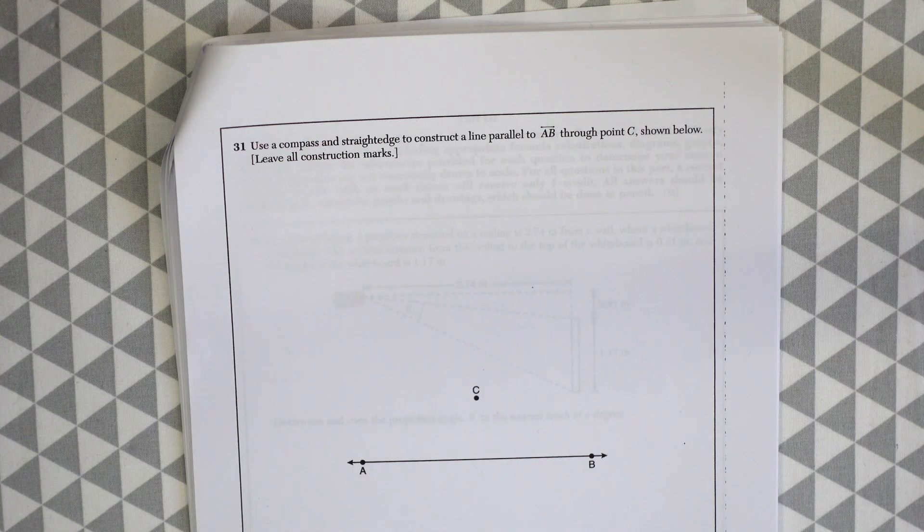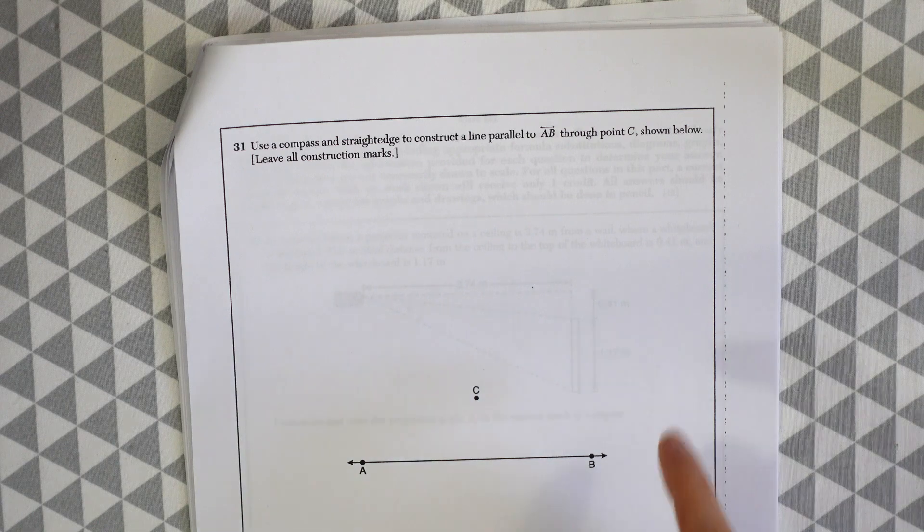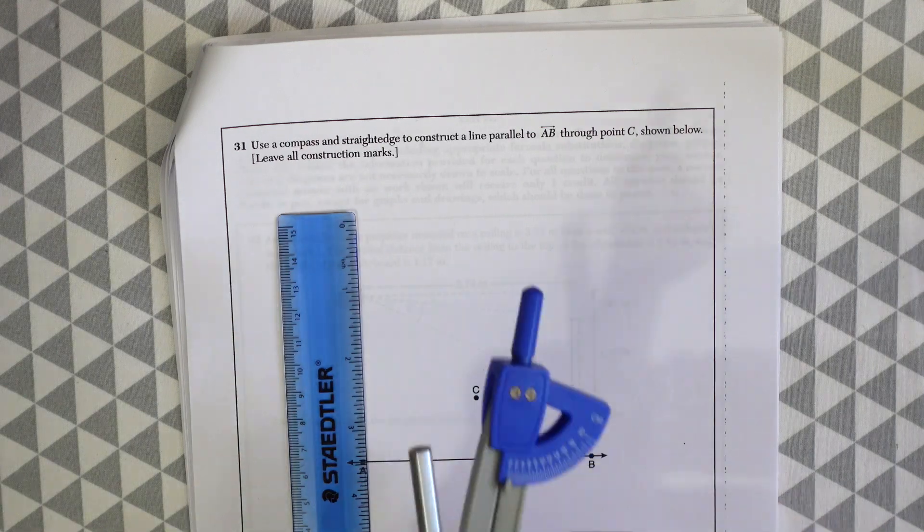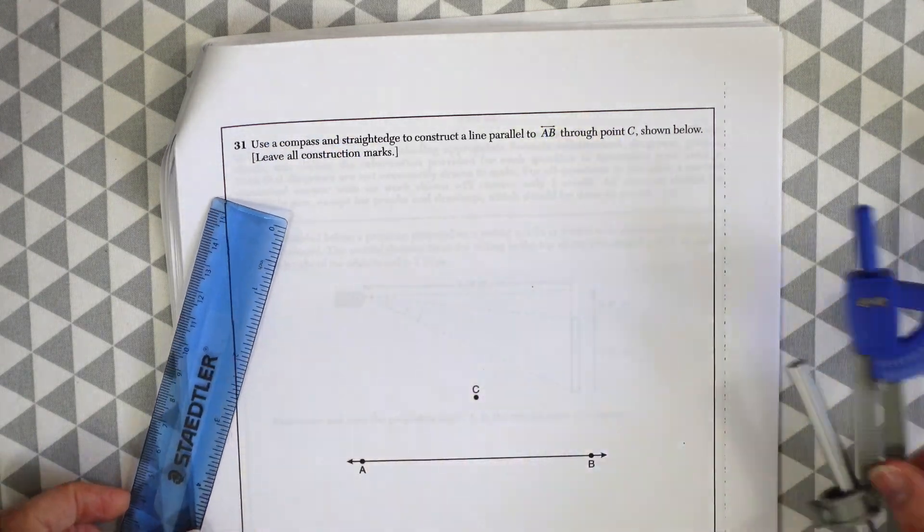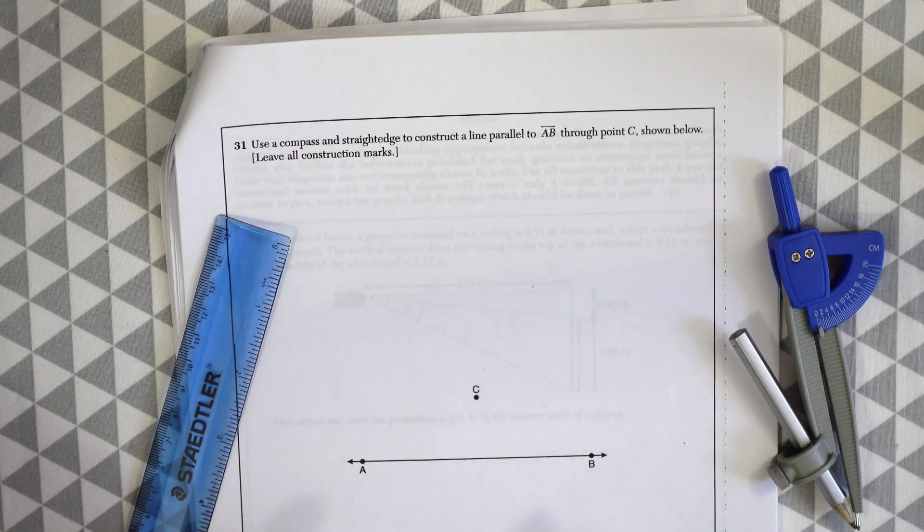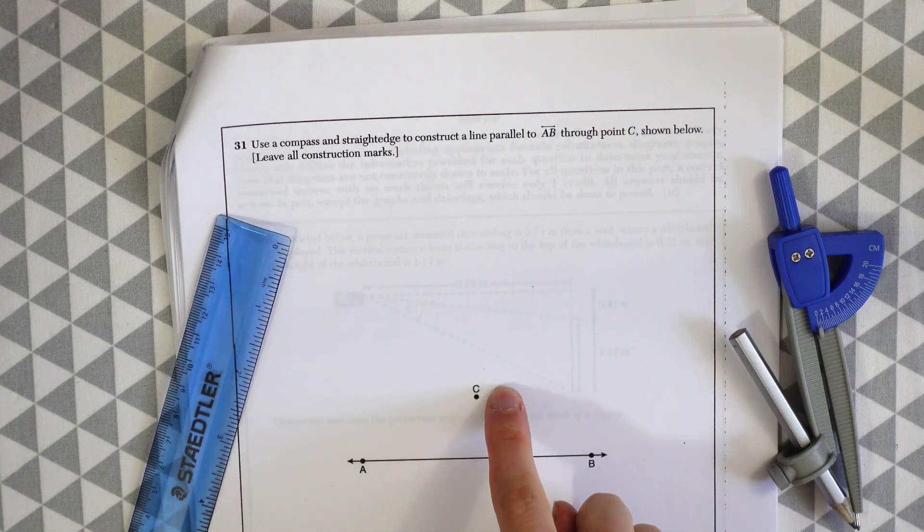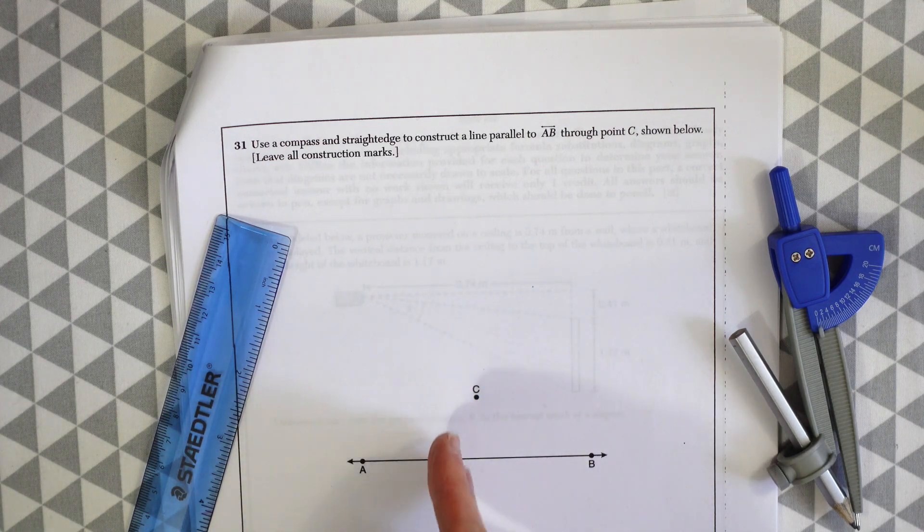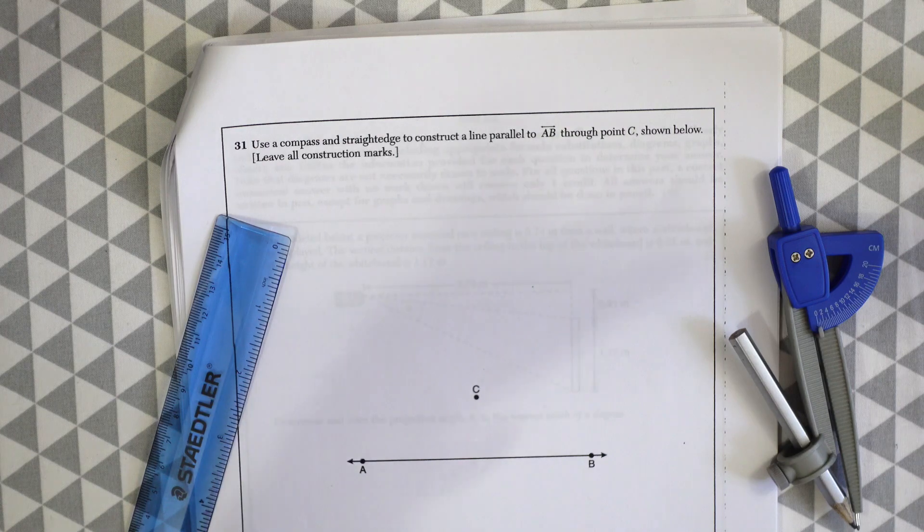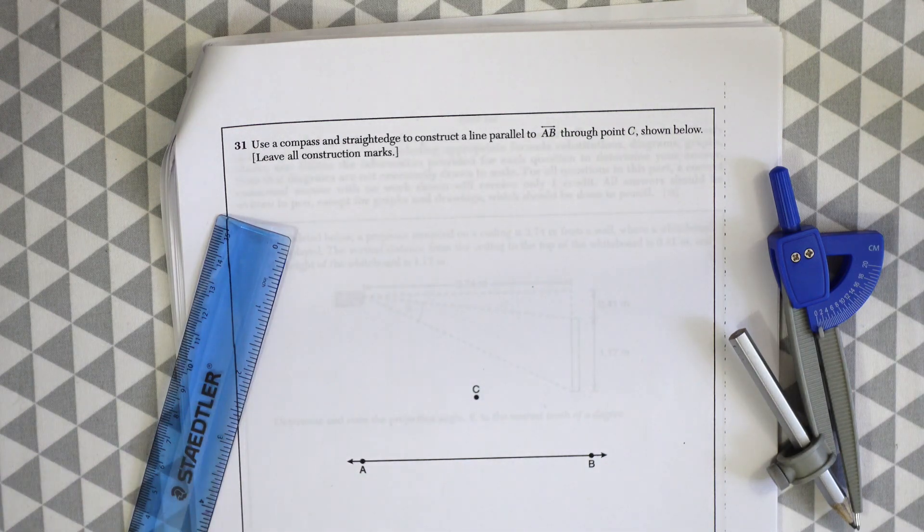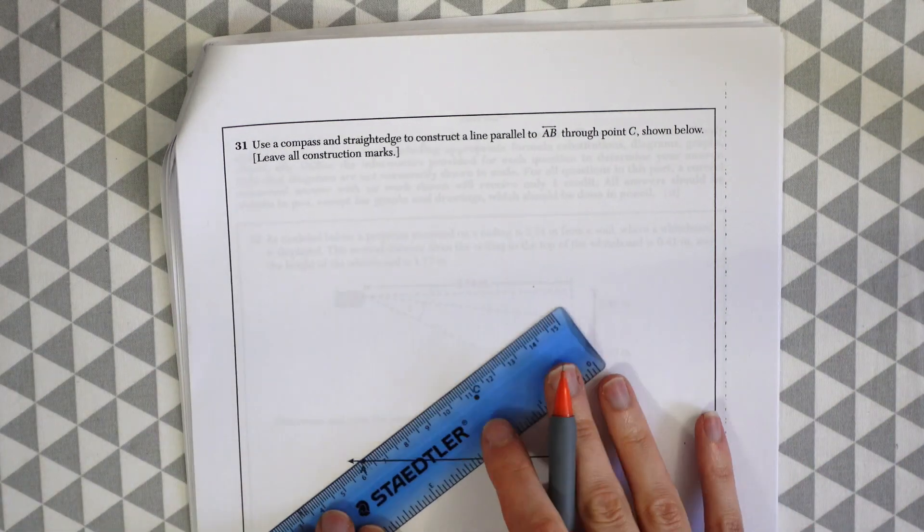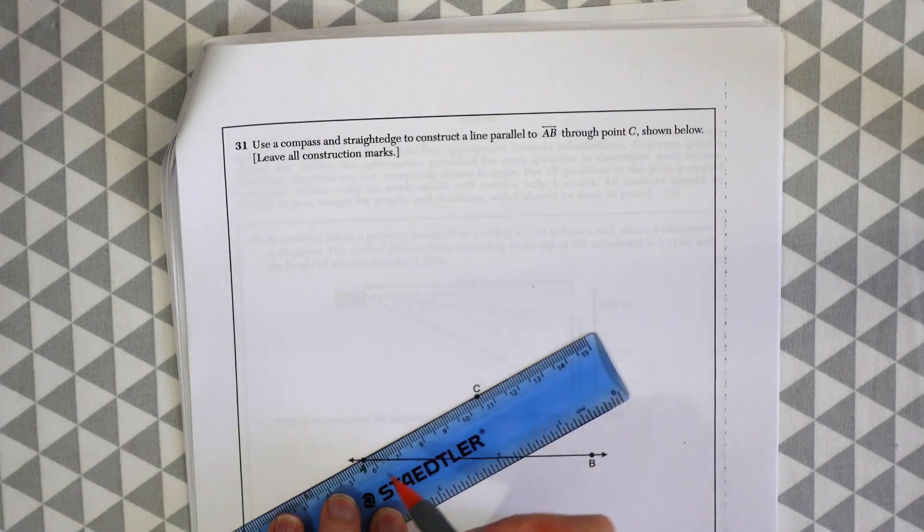Use a compass and straight edge to construct a line parallel to line AB through point C shown below. Leave all construction marks. So for this one we're going to want to take out our straight edge and compass. And the main idea for drawing a parallel line is to create a transversal first. So like a line cutting through these two points. And then we're going to measure and create arcs and angles to make sure that they're even that they're equal. So we're going to be making corresponding angles to create a parallel line. So that doesn't make sense. Don't worry. I'll show you how to do this anyway even if that was totally unclear.